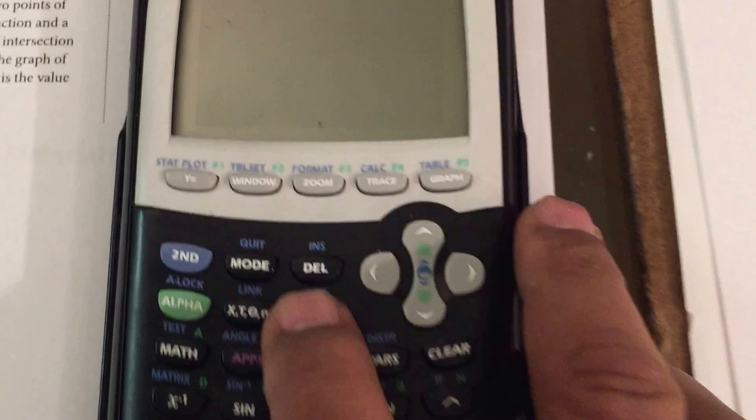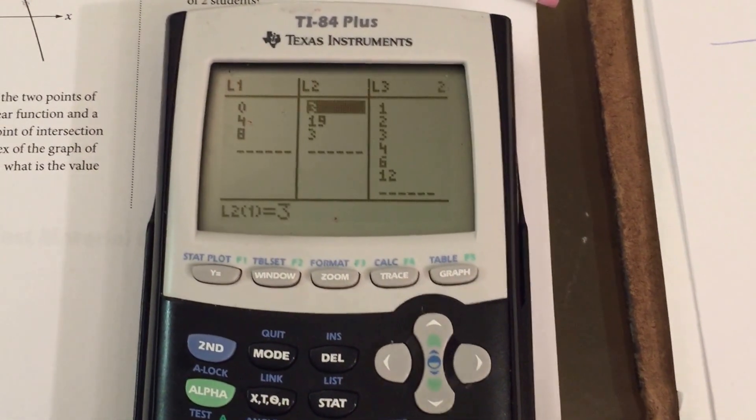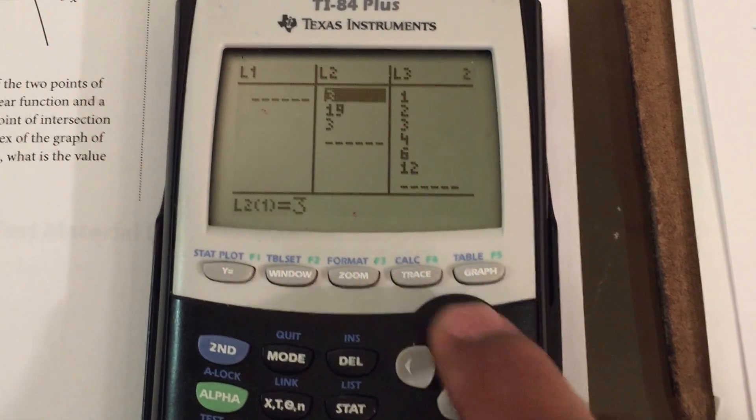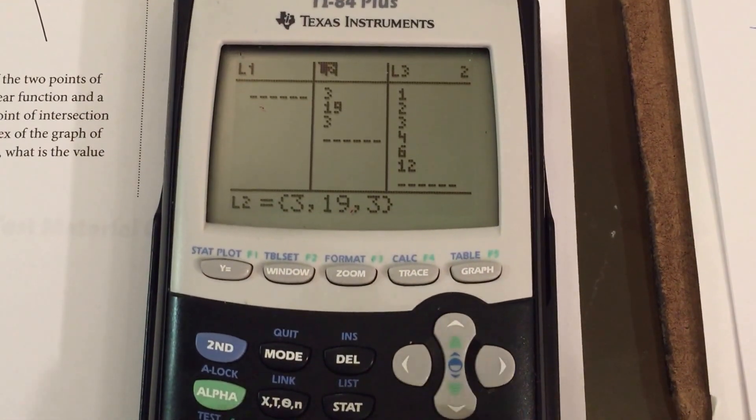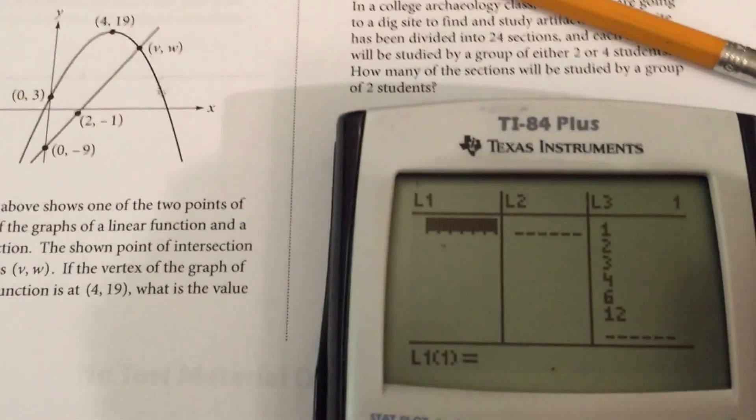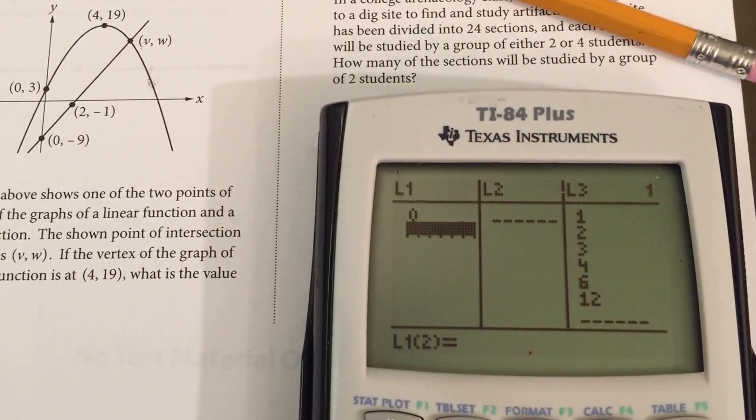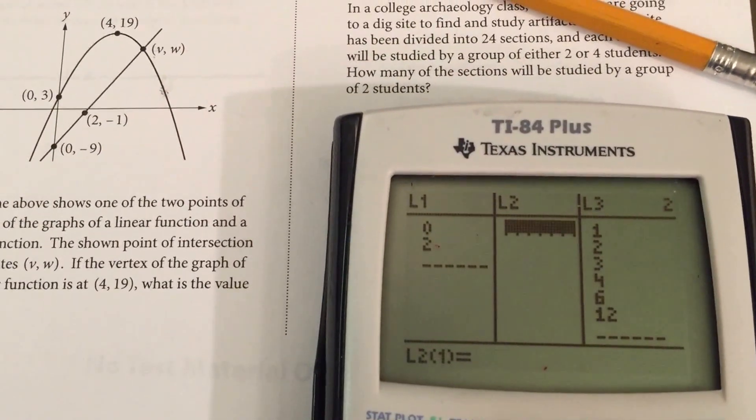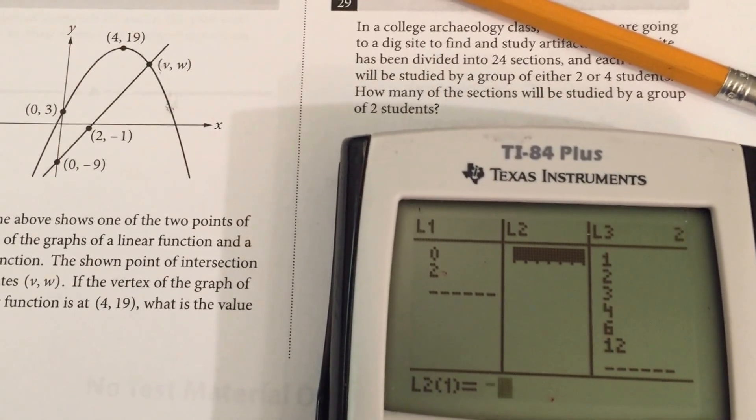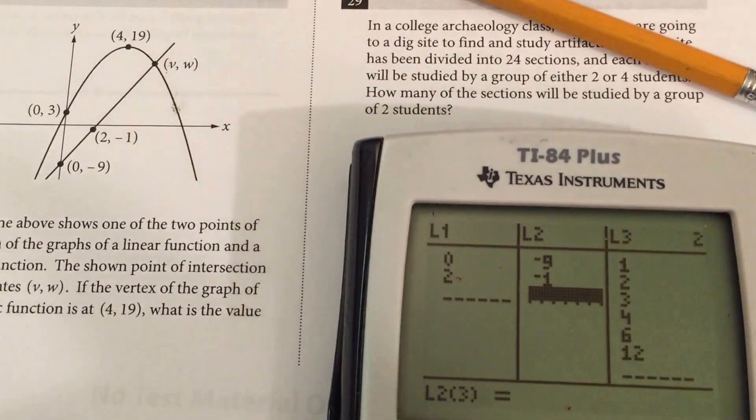The very first thing I would do is I would go to the stats key and I'm going to press enter and use the edit and I'm going to do a linear regression. So the very first thing I'm going to do is clear this list out because I'm going to use it and I'm going to clear this list out as well. Use clear and then press enter. Now I'm going to enter the coordinates. The coordinates that I have for the line are 0 and then the other X coordinate is 2, and then I'm going to go over to L2 and enter the corresponding Y coordinates. It'll be a negative 9 and then it'll be a negative 1. Press enter. So I've got two points on this line.